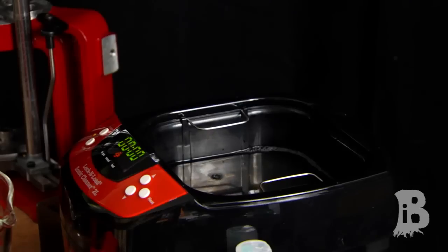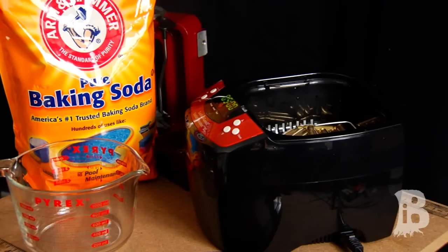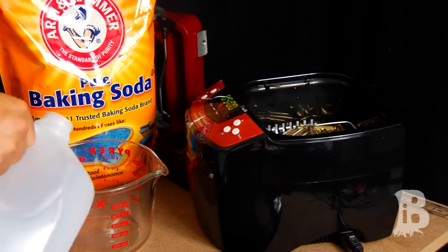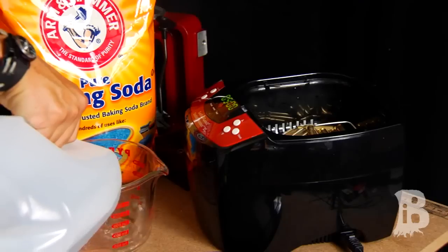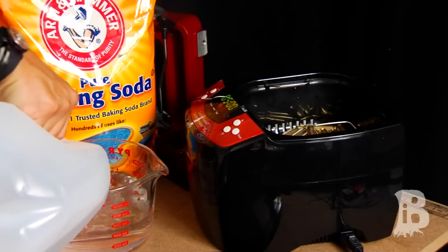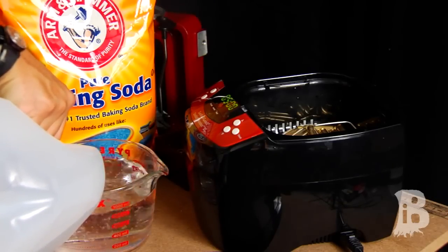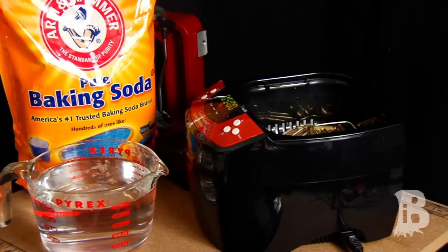Now that we've rinsed the brass of all the vinegar solution, it's time to neutralize it. If you guys can remember from chemistry class, an acid is neutralized by a base and vice versa. So what we're going to do is use about the same amount of distilled water as we did the entire solution last time. In my case, it's about a liter.